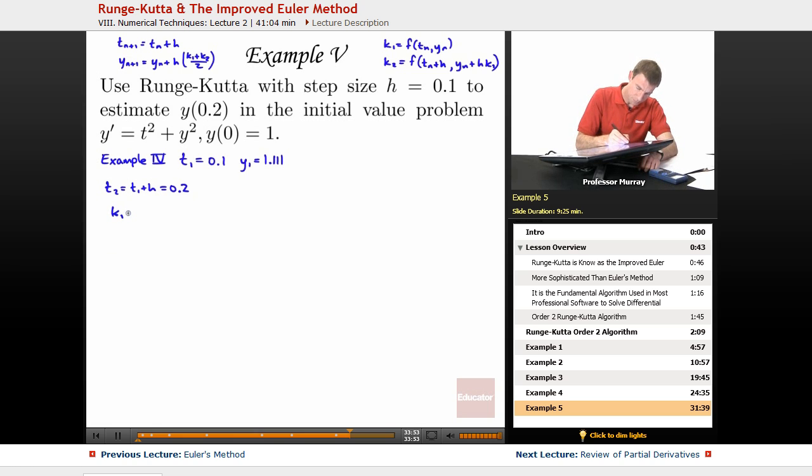So, k1 is f of t_n, y_n, so that's 0.1 and 1.111. Now, my f function is given by the differential equation right here, t squared plus y squared.